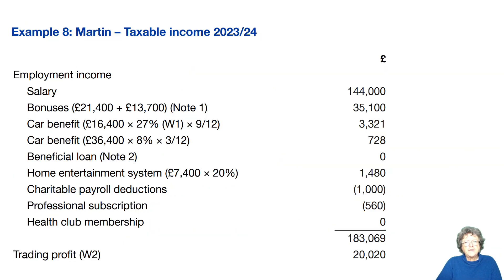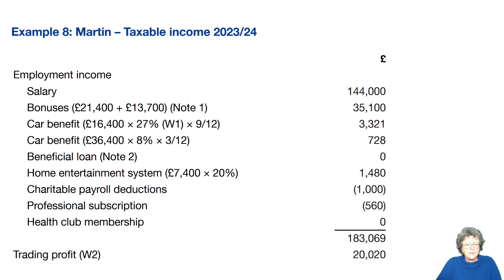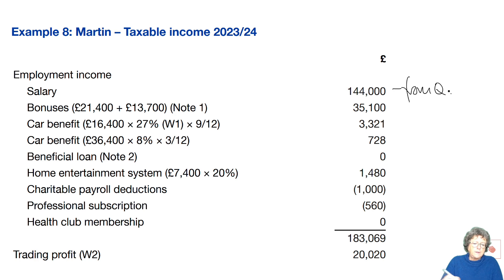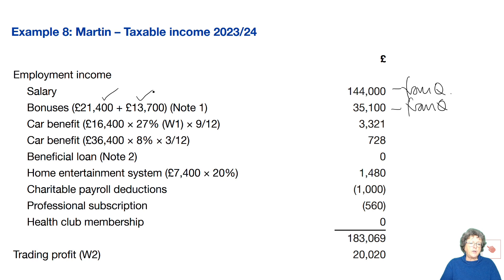This is the model answer — hopefully you did pause. Some of this information is copying from the question, so it's important to set up your pro forma and write down all the information you can straight away, because everything you copy across will give you half a mark. Then from there you can do the workings accordingly. The salary is copied from the question, there are two bonuses copied with dates, and the car benefit is a working.